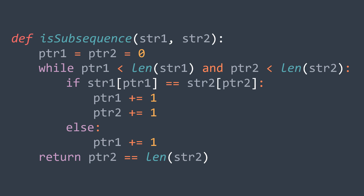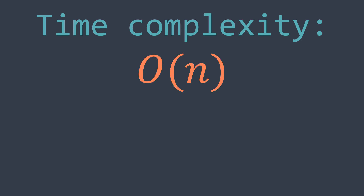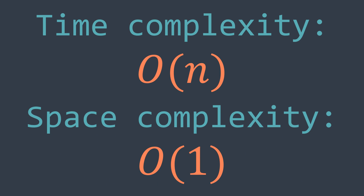For the time complexity of this solution, it's O(n) where n is the length of str1, because we are just traversing str1. And for space complexity, we aren't using additional space except simple variables like ptr1 and ptr2, so it's constant O(1).